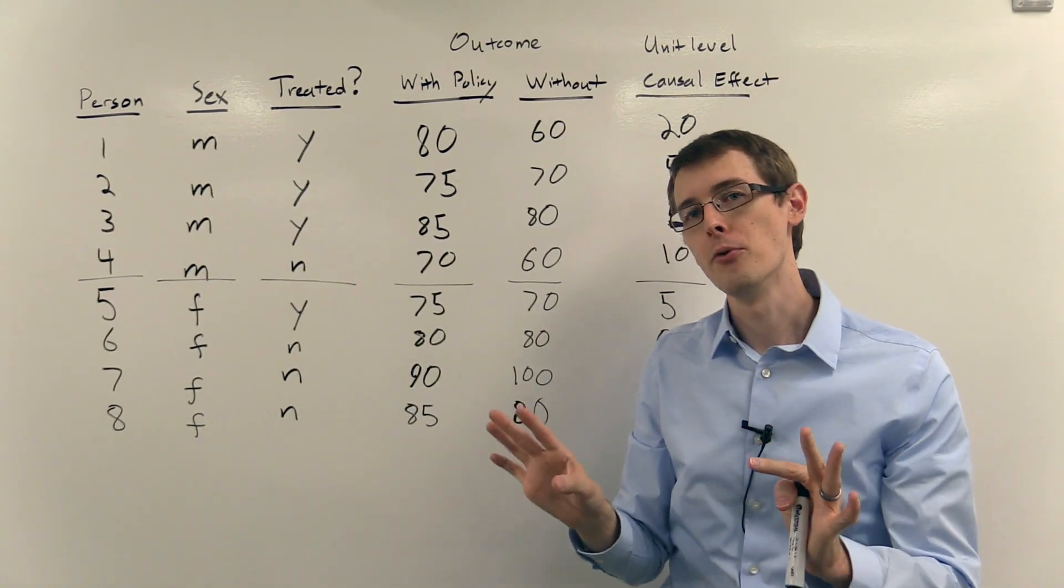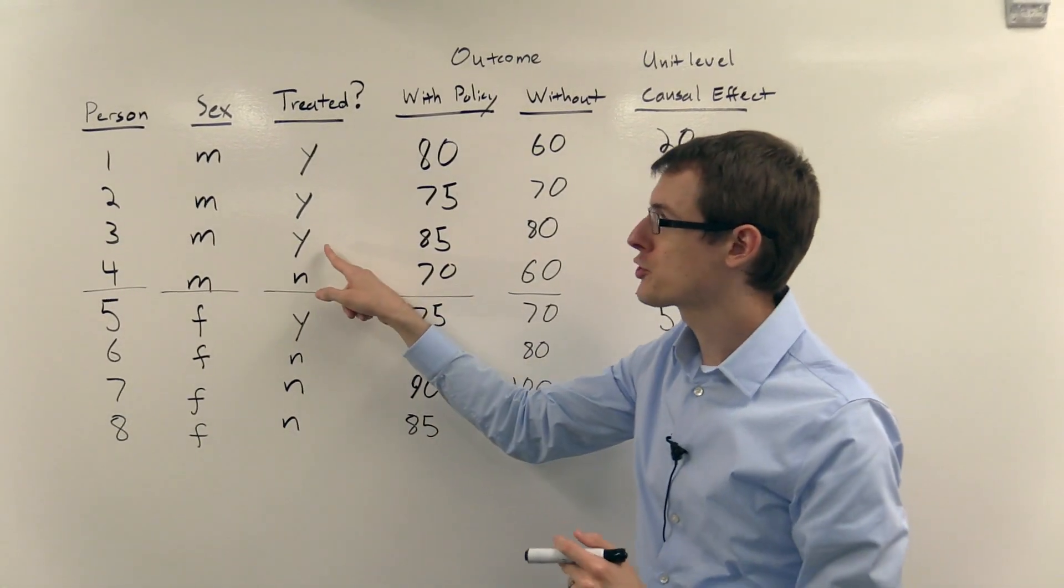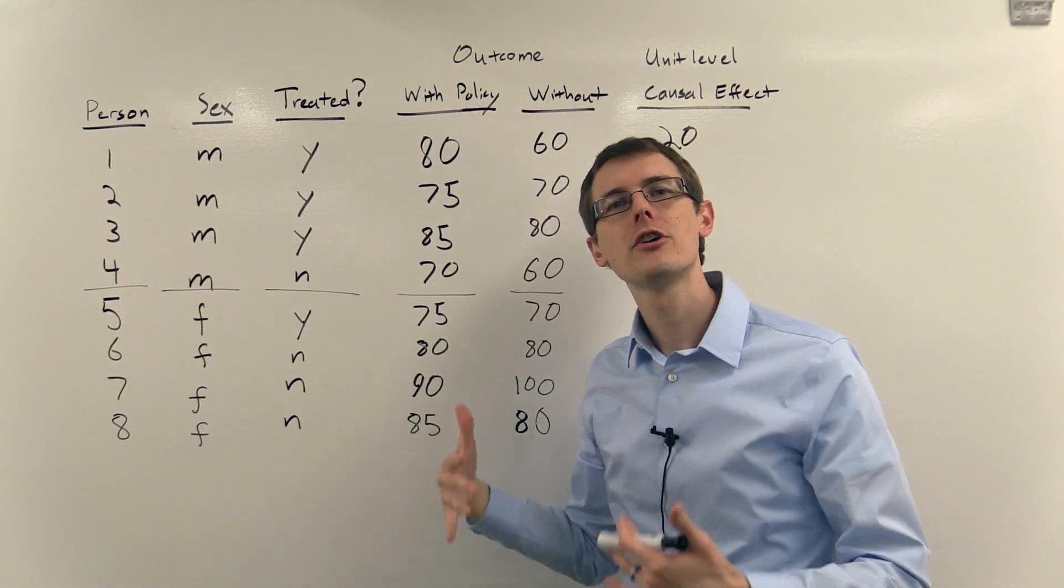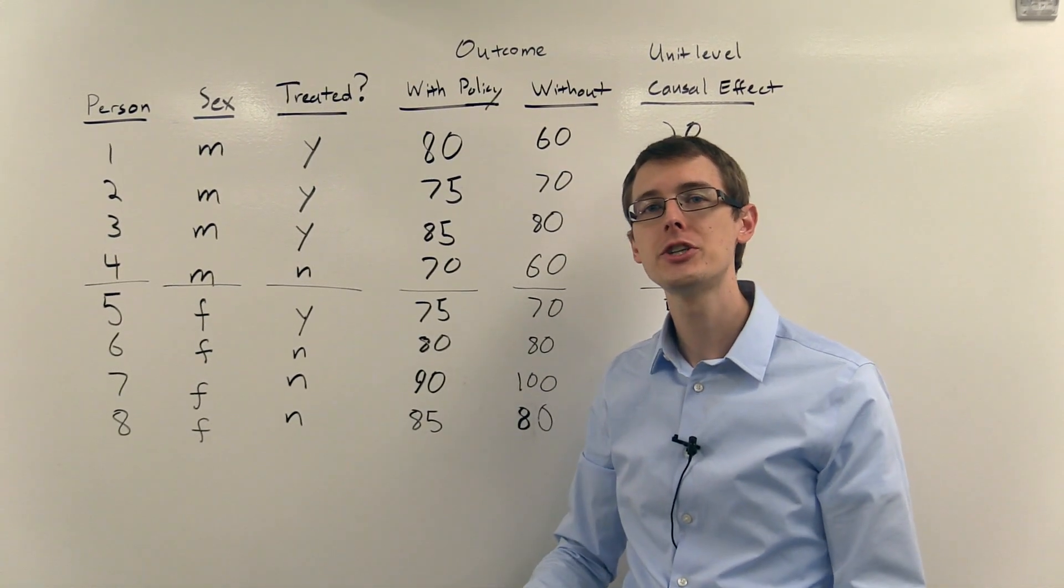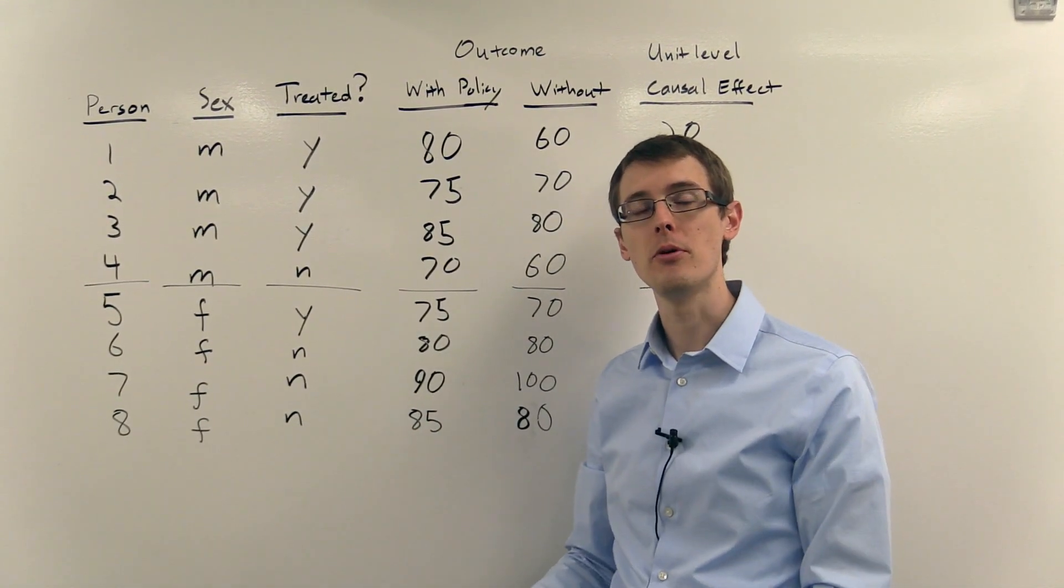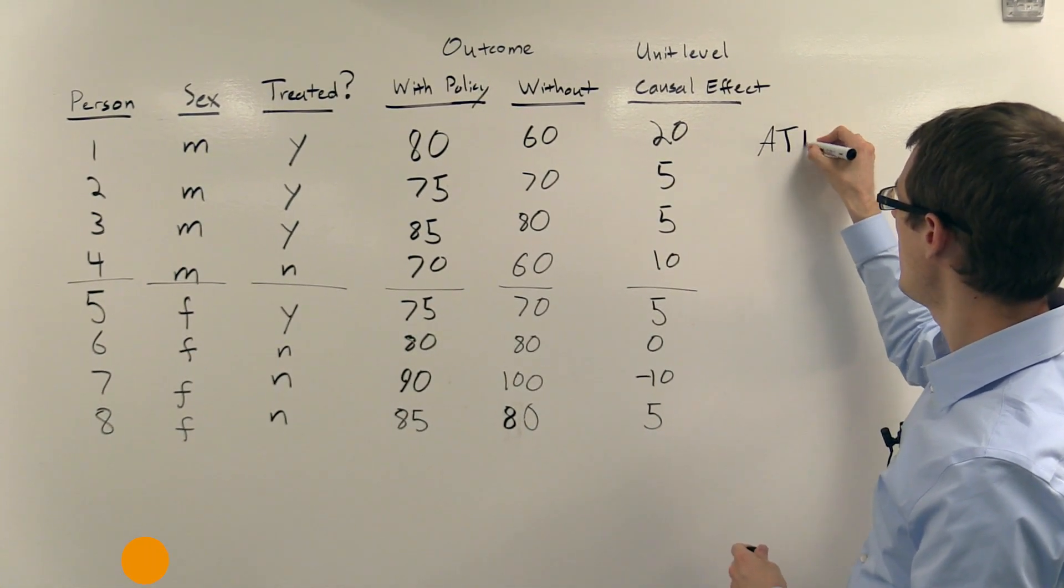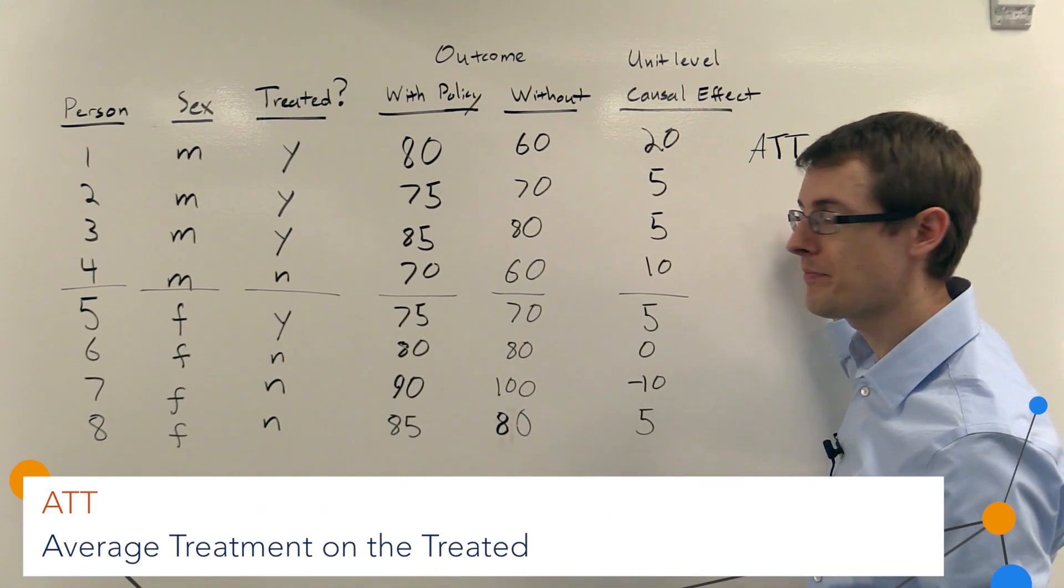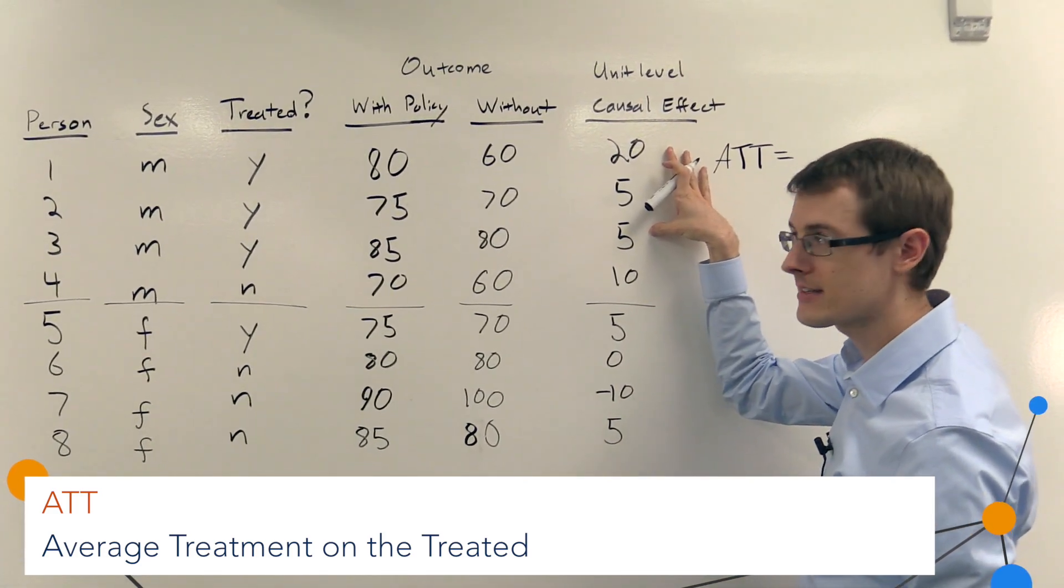So that's what we did before. Now, what's new? We can think about the treated people as a particular subset of people, the people who were treated. And we can define the average treatment effect for those people. So the average treatment on the treated, ATT, is just going to be the average unit causal effects for the people who were treated.